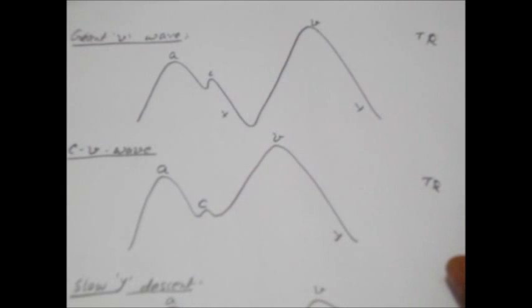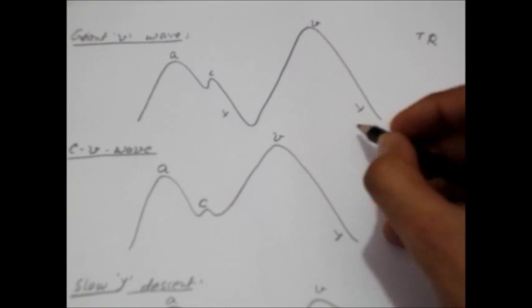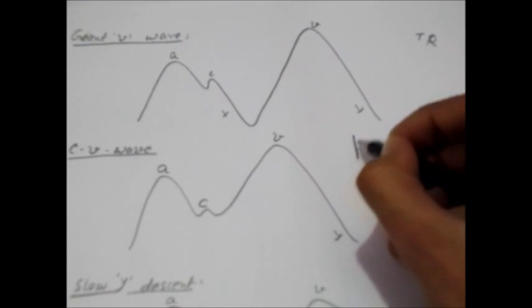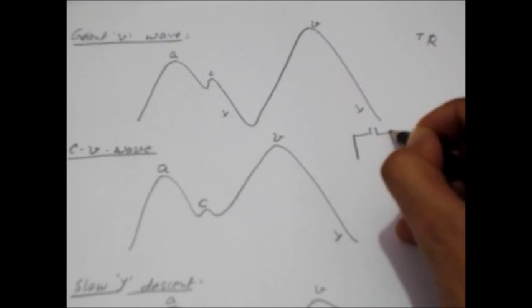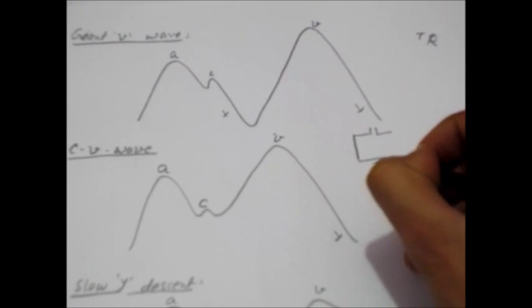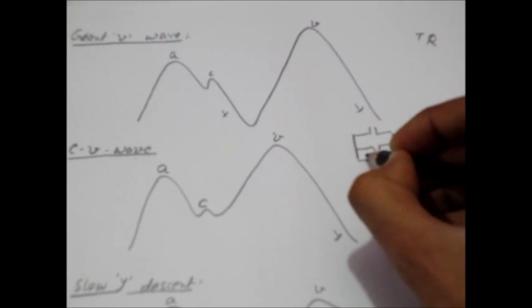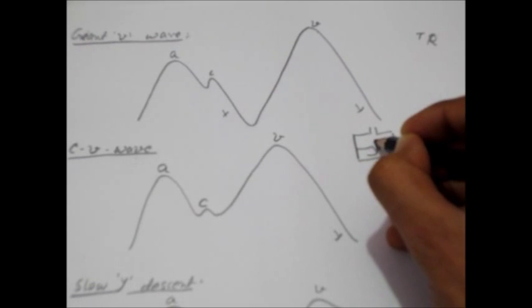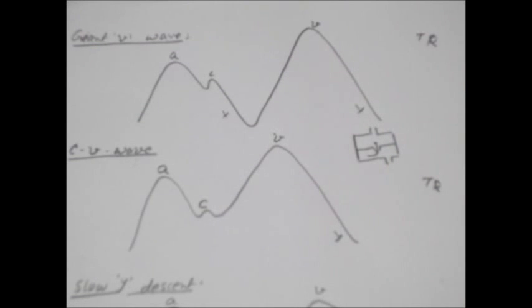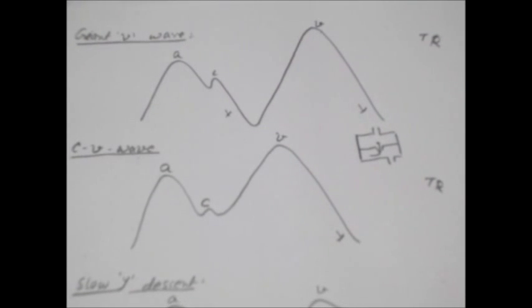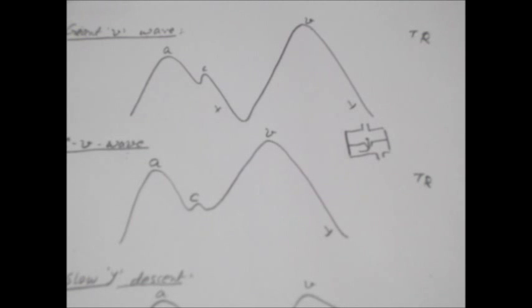What happens in tricuspid regurgitation is that blood flows from right ventricle to right atrium during systole. If in systole, the blood flows from right ventricle to right atrium, it will increase the pressure in the right atrium.